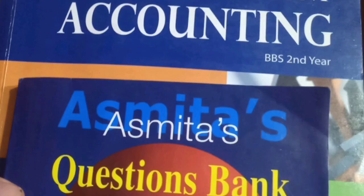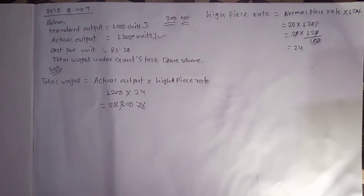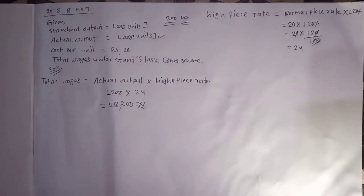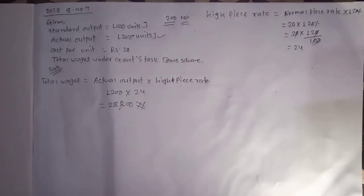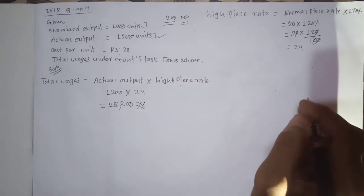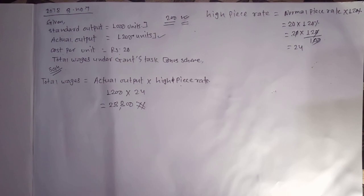Today we are going to talk about accounting for labor costs, in the 4th chapter of accounting for labor costs. In some companies we produce goods and services. We will also talk about the motivation for the bonus day and the game. I am going to share some of the theories.